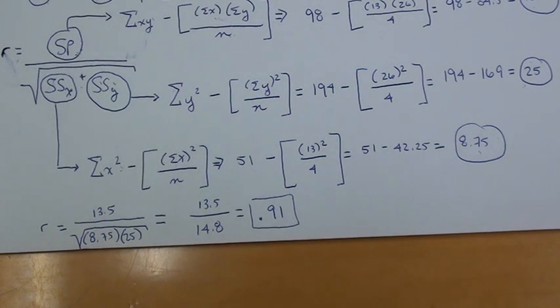What this means is that there is a very strong positive relationship between our measured variable X and measured variable Y such that as, for instance, as X increases in value, Y tends to increase along with it. And that's how you calculate a bivariate correlation.